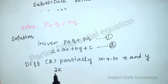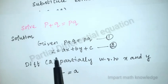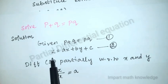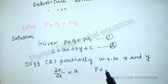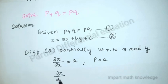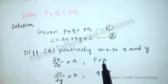Differentiating z = ax + by + c with respect to x: dou z / dou x = a, since the derivative of x is 1 and other terms are zero. So p = a. Similarly, differentiating with respect to y: dou z / dou y = b, so q = b. Now substitute p = a and q = b in equation 1.